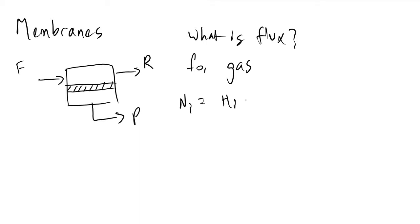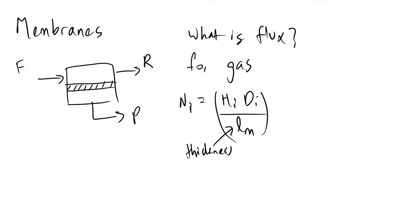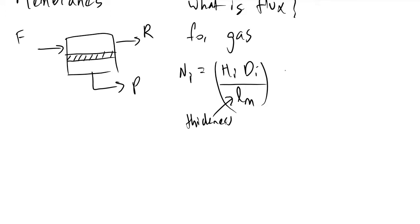This is divided by L sub m, which is the membrane thickness, times the driving force, which will be equivalent to the difference in partial pressure between the two sides of the membrane. So partial pressure of component i on the retentate side minus partial pressure of i on the permeate side.